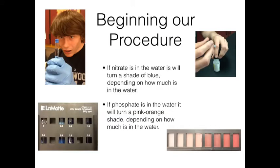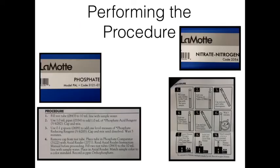To begin our procedure, we tested a positive control of both nitrate and phosphate. We did this so we could know what color the lake water would turn if it contained the element. Nitrate would turn blue and phosphate would turn a shade of pink. Then we performed the procedure using the Lamont testing kit for nitrate and phosphate.